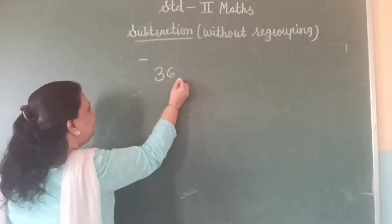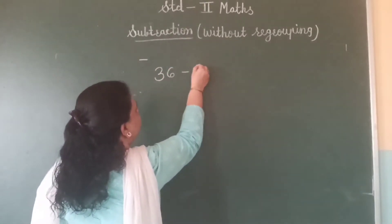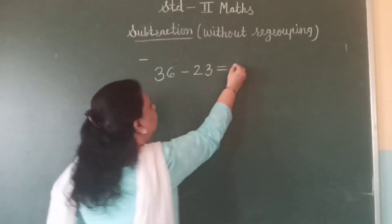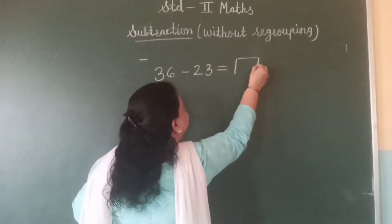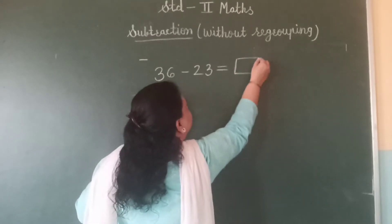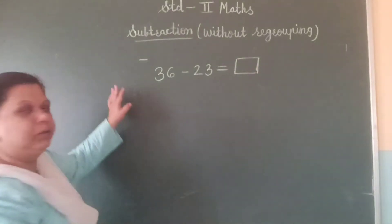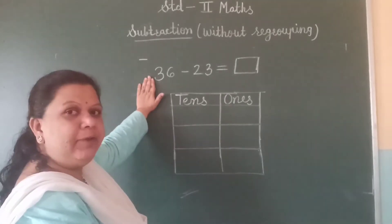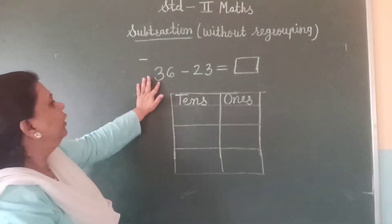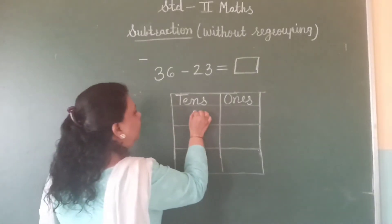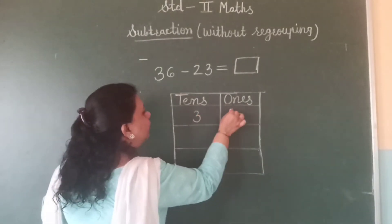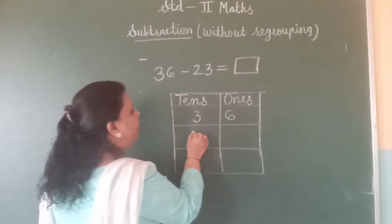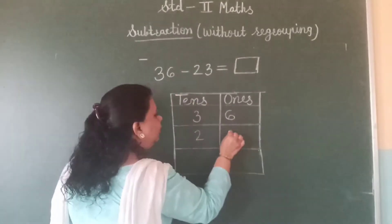Thirty-six minus twenty-three is equal to how many? First, we will arrange these numbers in tens and ones form. In number thirty-six, three tens and six ones. And in number twenty-three, two tens and three ones.